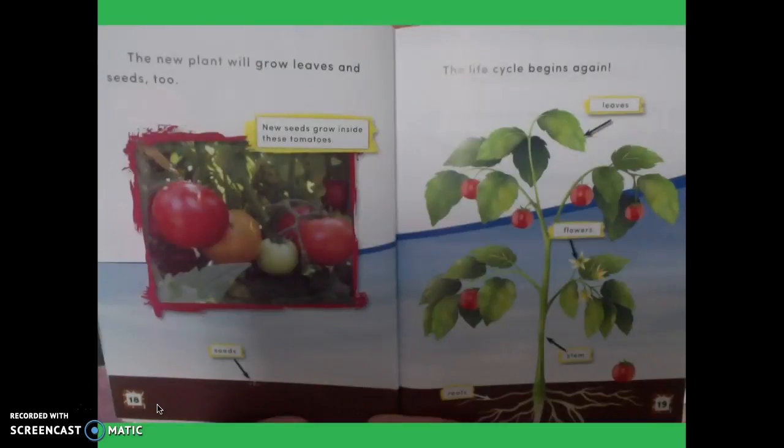The new plant will grow leaves and seeds, too. New seeds grow inside these tomatoes. The life cycle begins again. Oh, boys and girls, I see a lot of text features on this page. First, we have our caption here next to our tomato picture. So it's telling us what is in that picture. But then also I see some labels. The leaves are labeled. Flowers are labeled. The stem is labeled. Roots are labeled. And also on the other page, the seed. It's important that you have labels on your plant picture also when you do one in your ranger journal.